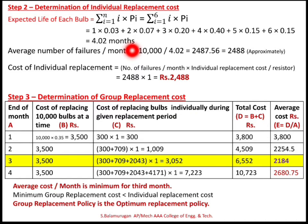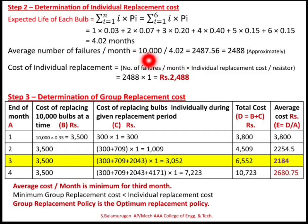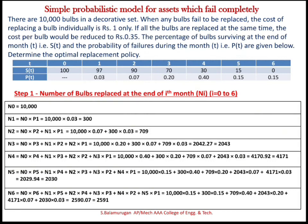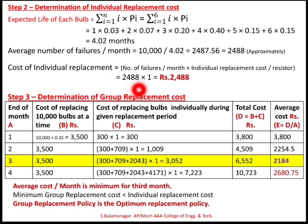Next, the average number of failures per month is calculated as total number of bulbs divided by expected life of each bulb: 10,000 ÷ 4.02 = 2,488 failures per month. For individual replacement, the cost is 1 rupee per bulb, so the individual replacement cost is 2,488 × 1 = 2,488 rupees per month.